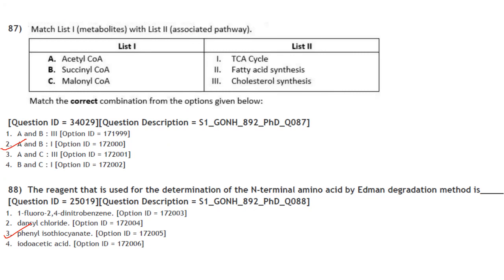Match metabolites with metabolic pathways: Acetyl-CoA — TCA cycle; Succinyl-CoA — TCA cycle. The correct combination is A and B, option 2. The reagent used for determination of the N-terminal amino acid by Edman degradation is phenylisothiocyanate.